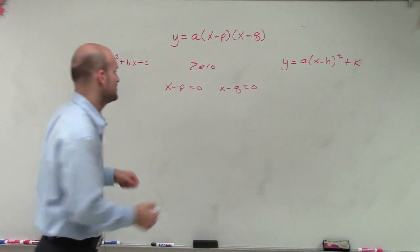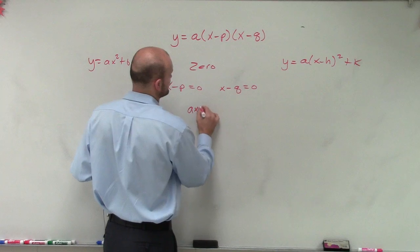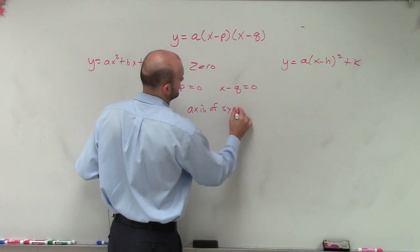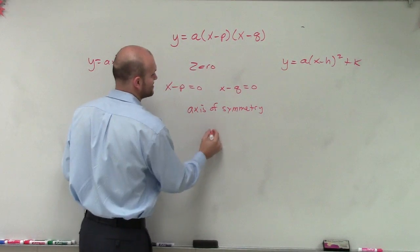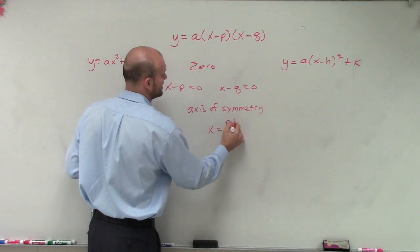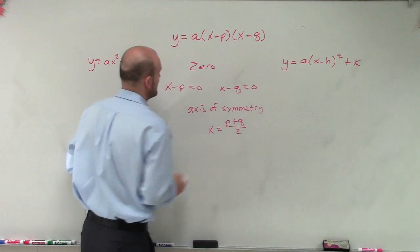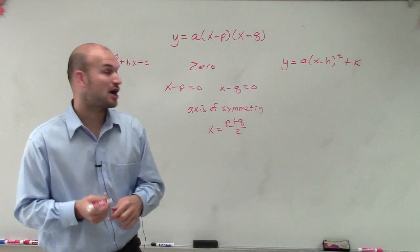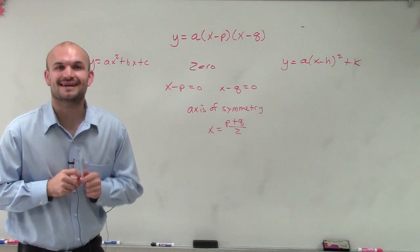So I can use the zero product property. And then if I want to find the axis of symmetry, I do x equals p plus q divided by 2. So there's a brief introduction of what intercept form is for a quadratic. Thanks.